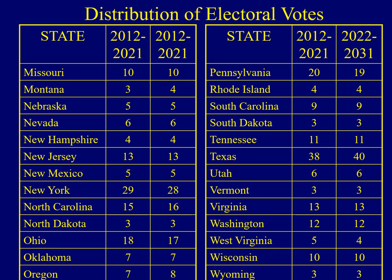Here we see some additional examples. New York used to be the largest state in the union for decades, but it lost a member of the House of Representatives, going from 29 to 28 electoral votes. Ohio also lost an electoral vote. The big winner was Texas, which went from 38 electoral votes to 40. In the last two census cycles, Texas has gained six electoral votes because its population is growing so quickly.